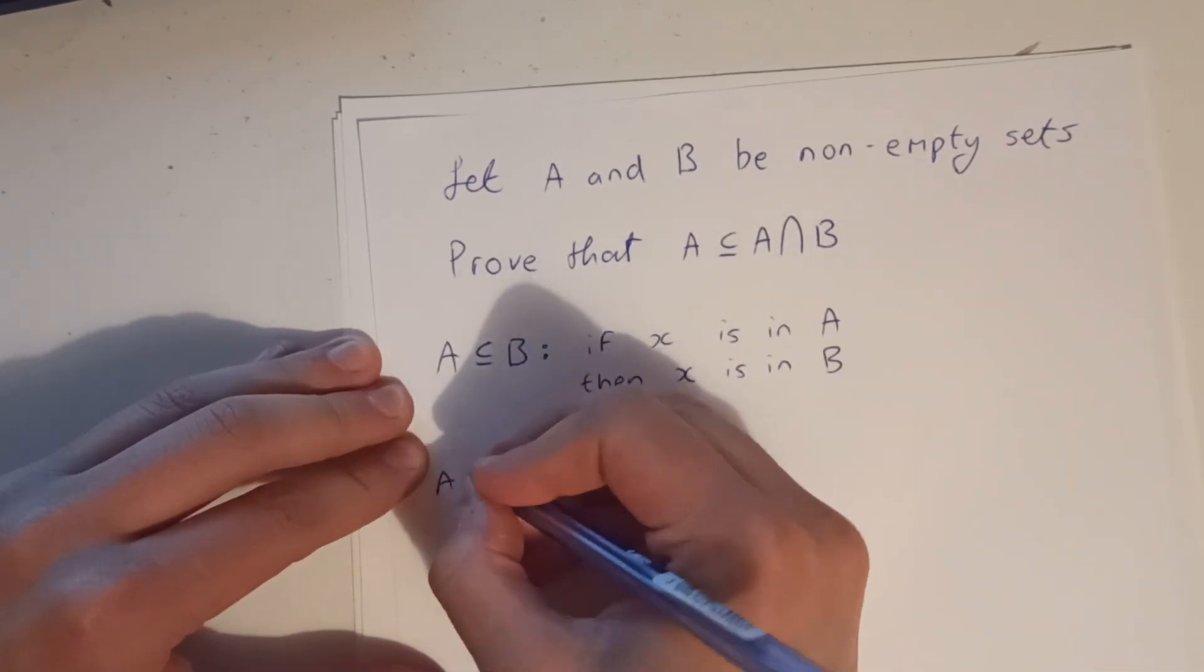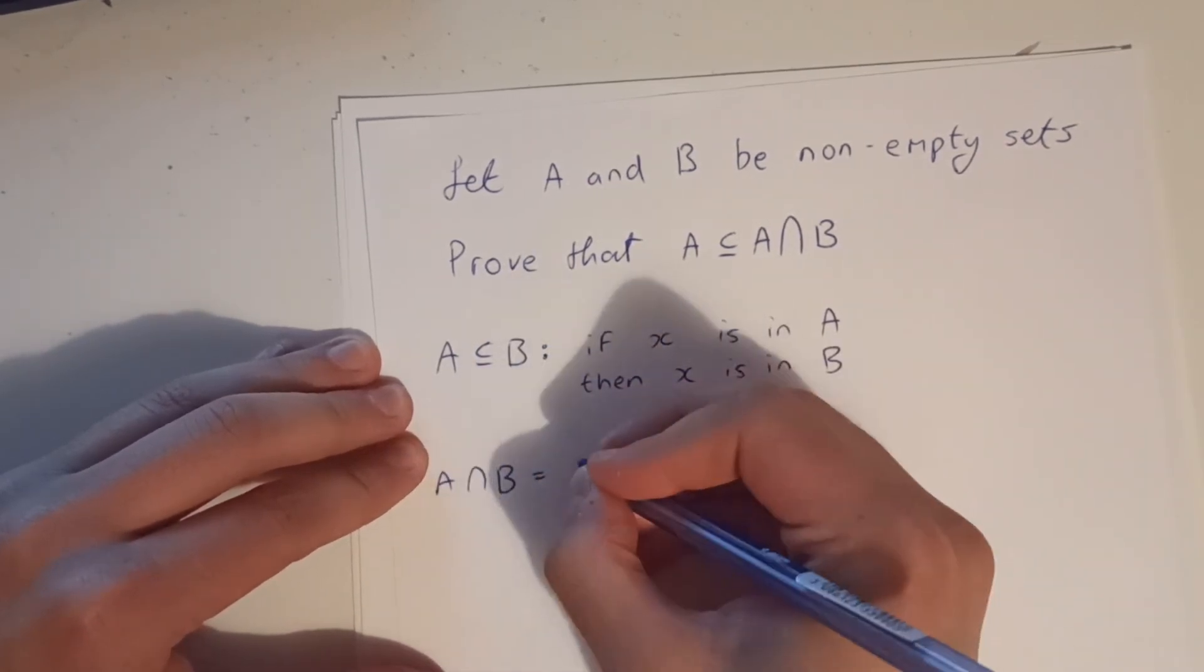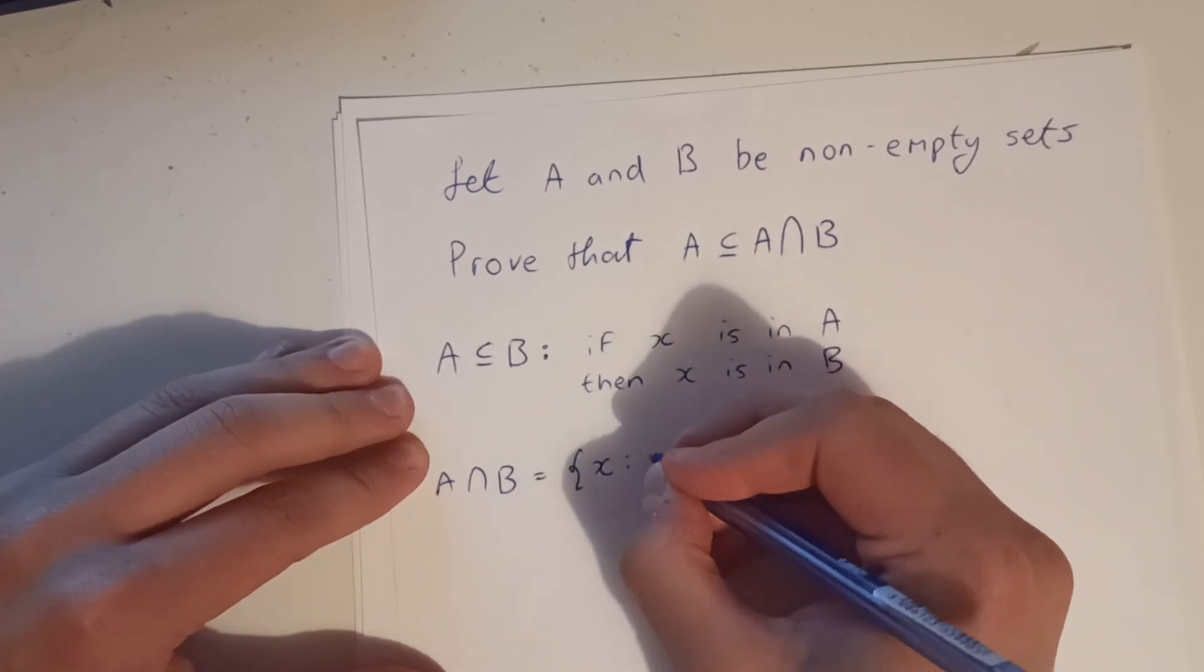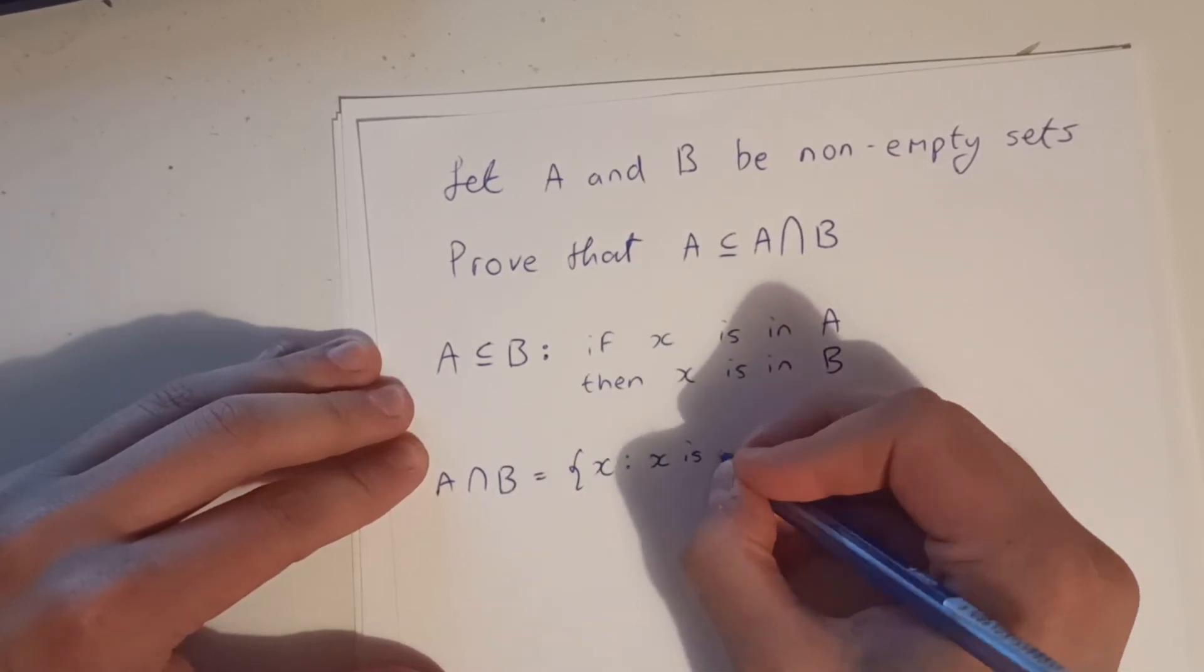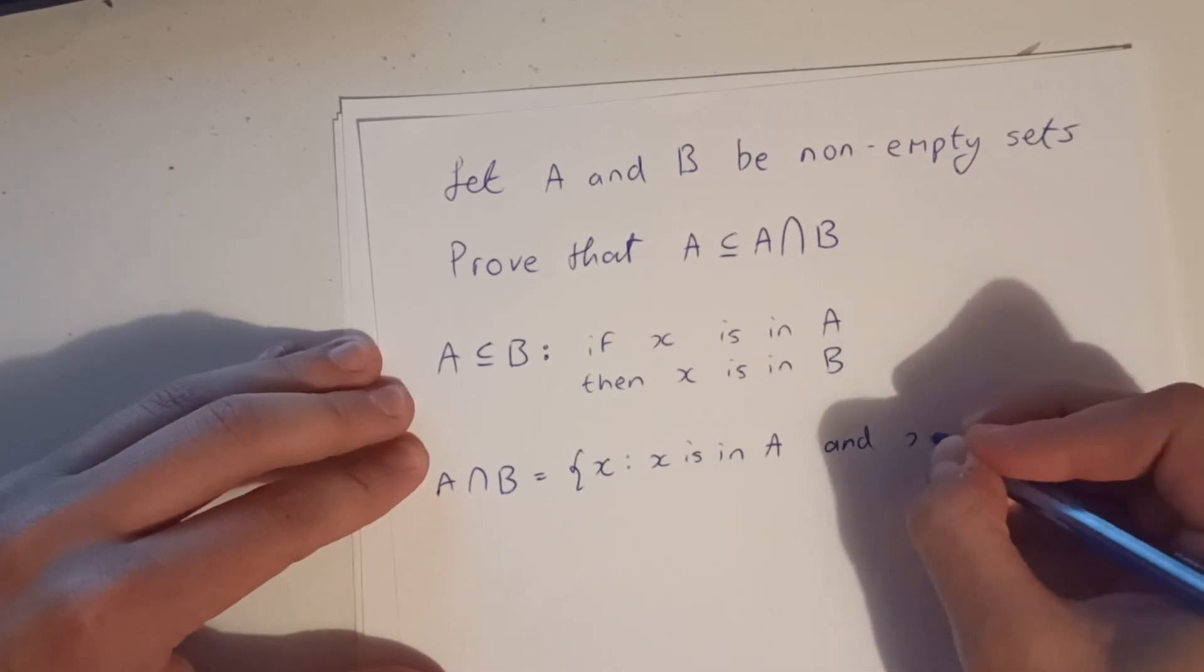And A intersection B is the set of all X, such that, X is in A and X is in B.